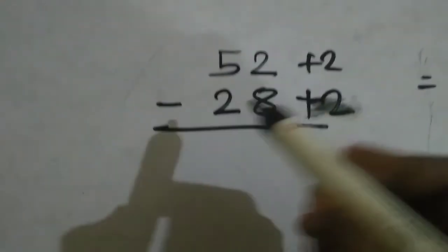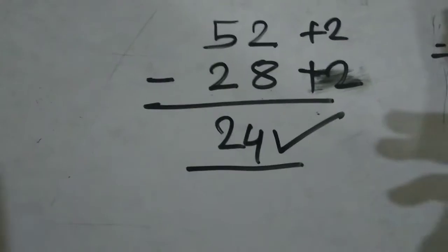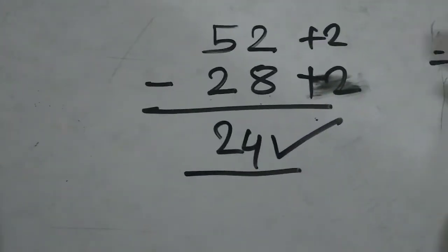So it's so simple: 54 minus 30. 4 minus 0 is 4, 5 minus 3 is 2, so 24 is the right answer. See, it's very easy. There's no need of any carry and all the stuff.